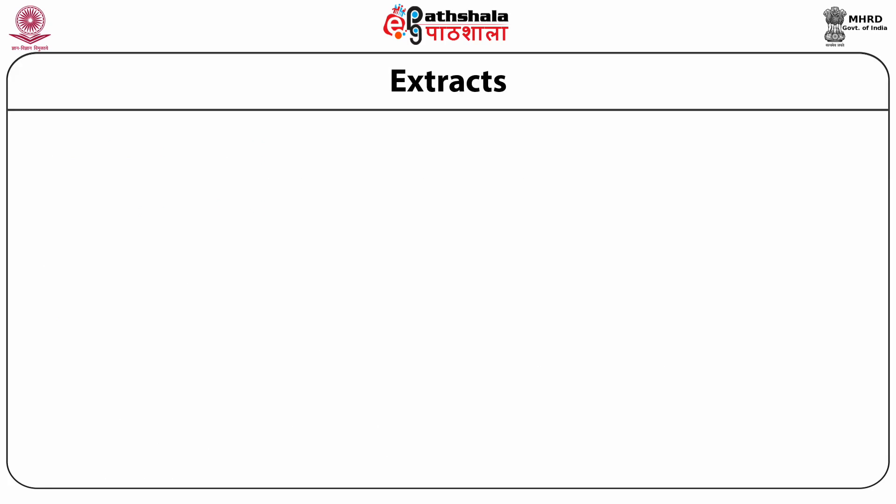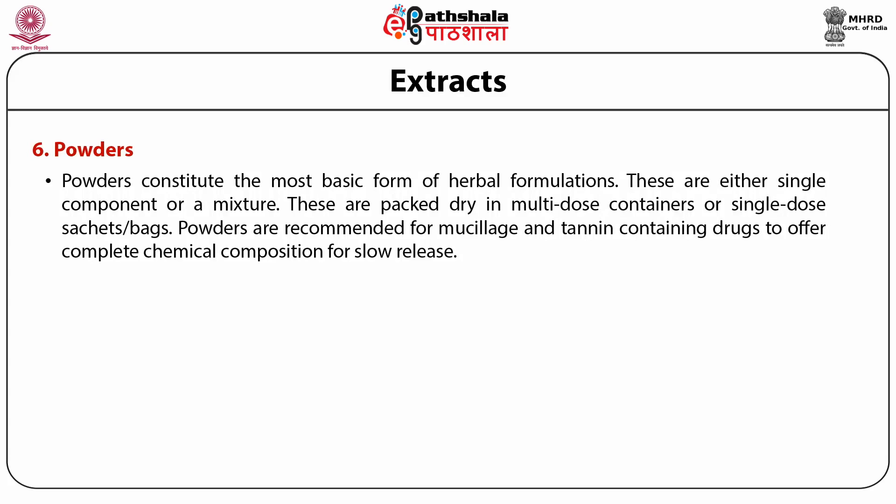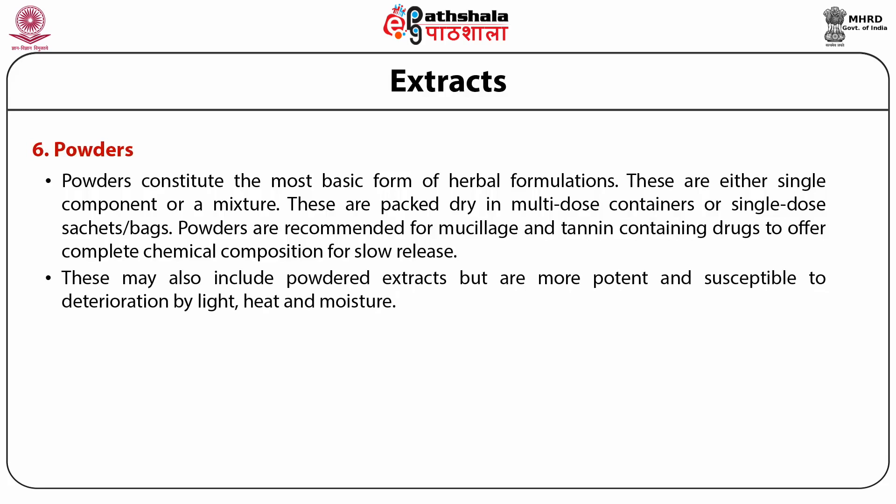The sixth form is powders. Powders constitute the most basic form of herbal formulations — they are either single component or mixtures, packed in dry multi-dose containers or single-dose sachets. Powders are recommended for formulations of mucilage- and tannin-containing drugs, and offer complete chemical composition for slow release to the patient. Powdered extracts are more potent but susceptible to deterioration from light, heat, and moisture, as they are not protected by the plant matrix.